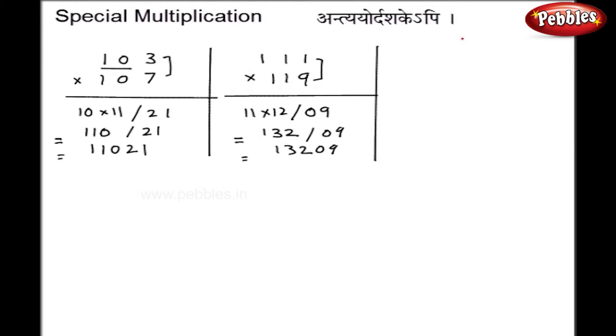I will take one more example to make it more clear. Say 1032 multiplied by 1038. Now here my right hand side is 16 as 8 into 2, and left hand side 103 into 104. You can do this multiplication 103 and 104 by any method in Vedic Mathematics. Here I will write the direct answer: 103 into 104 is 10712, and 16. So my final answer is 1071216.